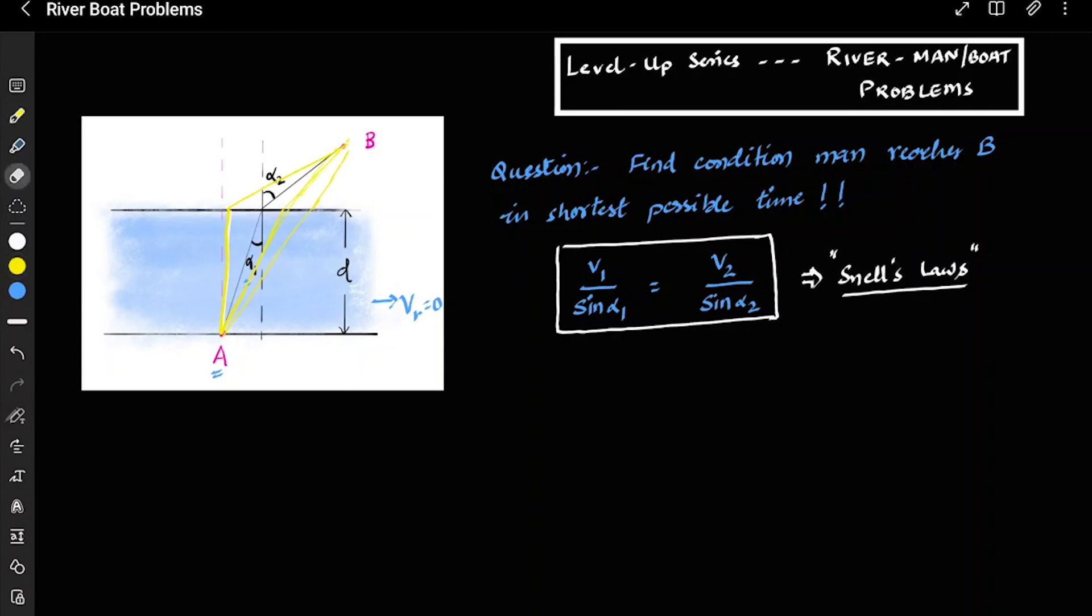So all possible paths are available to us, or he can try to directly move in a straight line towards B. So these are not possible. One of the ways is possible and one of the ways will give me the shortest possible time. So let us try to find out how.